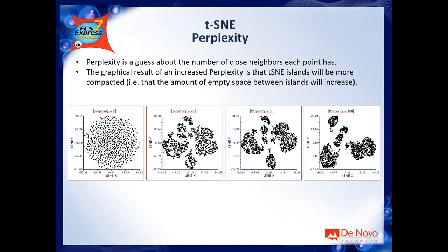What you see here is the same dataset with the same settings — the only thing changed is perplexity. At perplexity 2 there is essentially no separation, because very low perplexity means you expect very small islands, leading to many tiny islands with no clear separation. At perplexity 20, 50, and 100 you can see islands in all of them, but 50 and 100 display the islands most clearly. The best approach is to try a couple of values with your own dataset and see which works better.